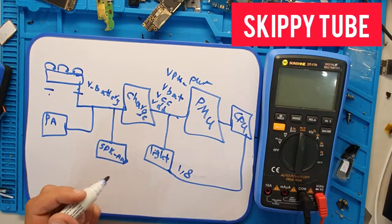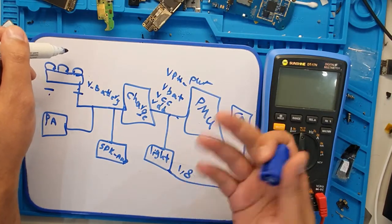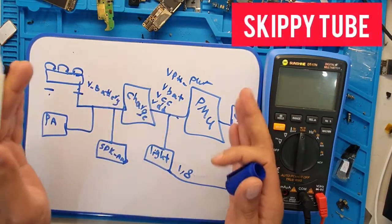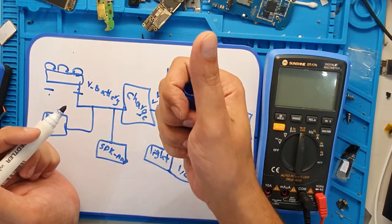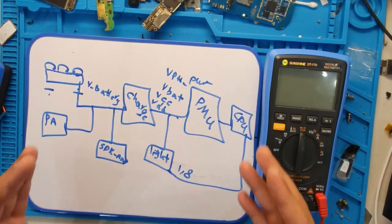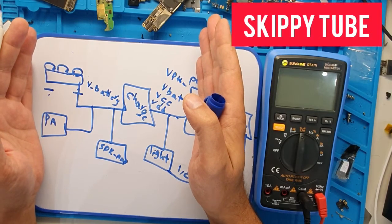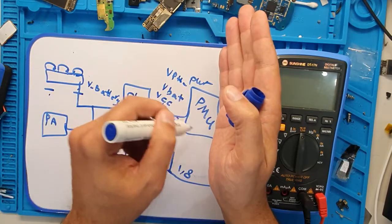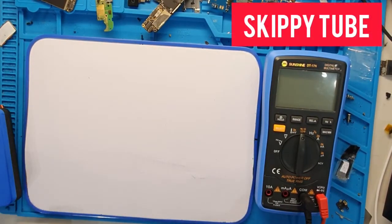I'll explain more about that later, but first I want to show you how to find the issue on the public voltage. When the power supply is connected to the battery connector, this standby voltage comes in and waits. When you press the power button, the CPU starts processing and turns on the boot output and software. The public voltage, V-battery, sits between the battery connector and before the power management IC.